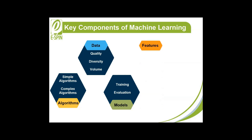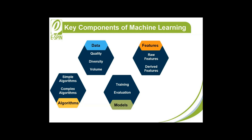4. Features are individual measurable properties or characteristics of the data that influence the model's predictions. Examples include raw features, directly extracted from the dataset, and derived features, created through transformations such as scaling or combining existing features.